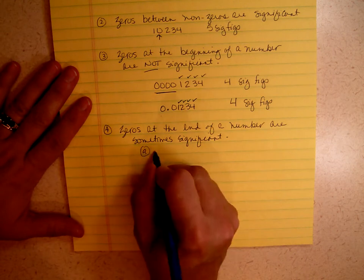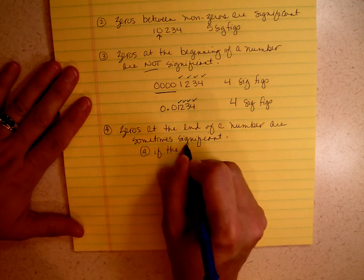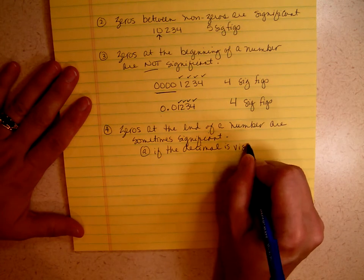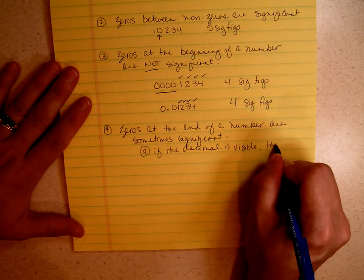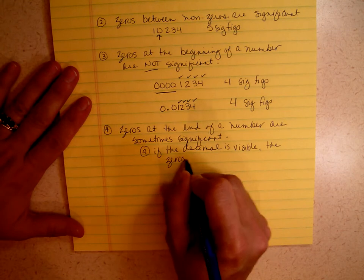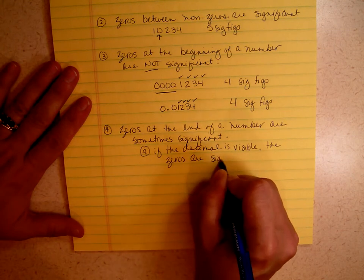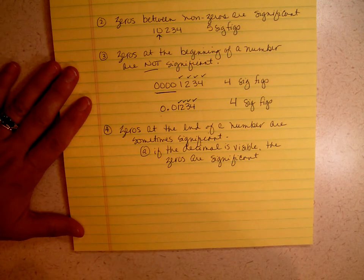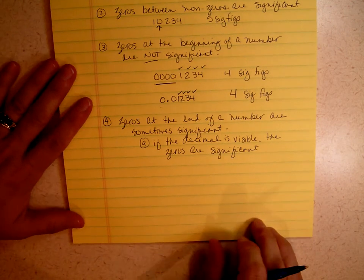Let's call it A. If the decimal is visible, if you can see it, the zeros are significant. Now notice, I didn't really say where the decimal was. I just said if it was showing.